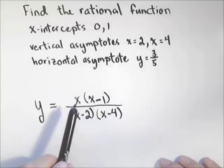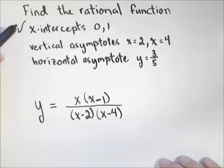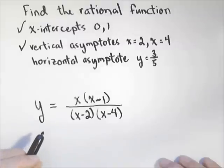Now what we have is a rational function that has x-intercepts at zero and one, and vertical asymptotes at two and four.